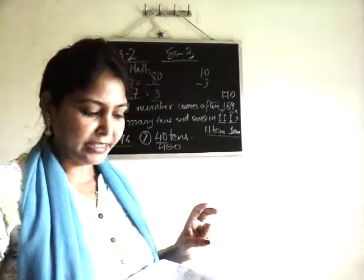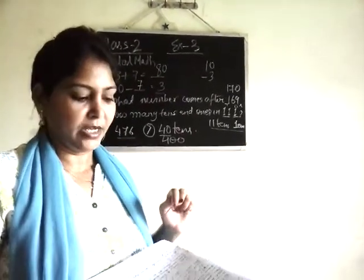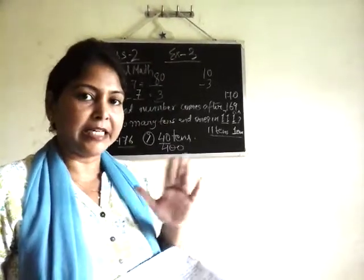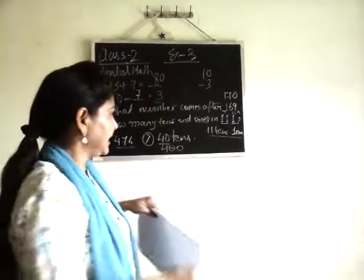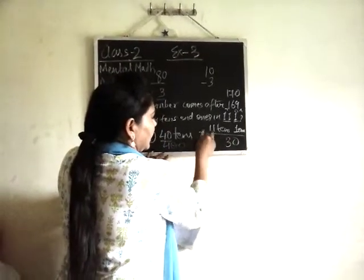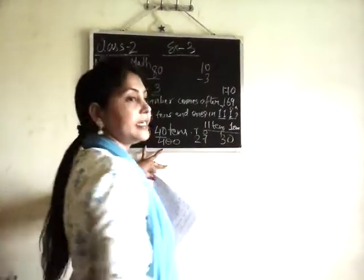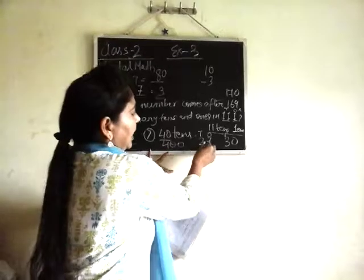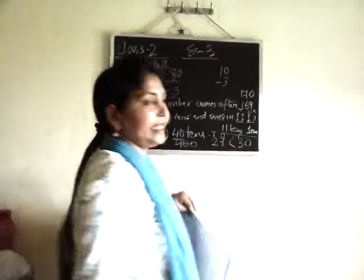Question number 8: 27, a circle, then 30 — which one is bigger? First, check the place value. In 30, the digit 3 is in the tens place. In 27, the digit 2 is in the tens place. Since 3 is greater than 2, obviously 30 is bigger.